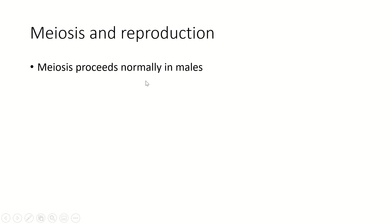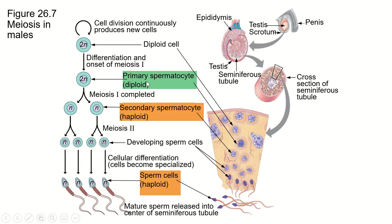So in males, meiosis proceeds normally. It happens within the testes of the male. The testis is the actual organ. The testicle is the organ with the skin and other layers of tissue that surround it. We'll talk about that next time when we talk about reproduction.